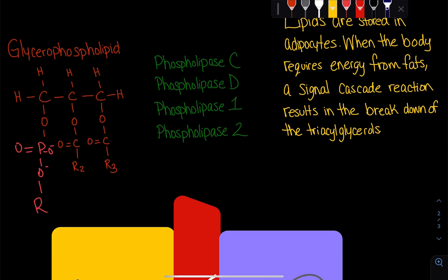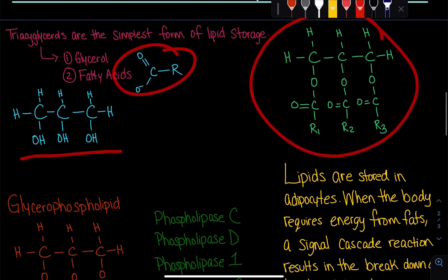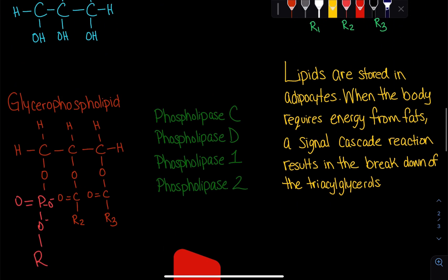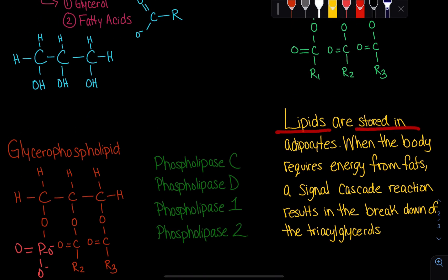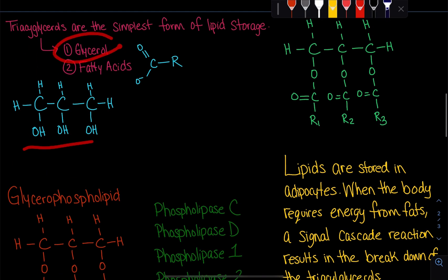Once a glycerophospholipid or triacylglycerol is broken down into its components — glycerol and fatty acids — we can use them to generate energy. Lipids are stored in adipocytes, which are specialized cells that store fats. When the body requires energy from fats, such as when glucose levels are low, a signal cascade occurs in the adipocyte that results in the breakdown of triacylglycerol into glycerol and fatty acids.